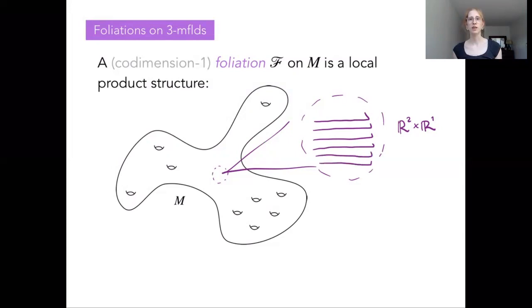And when we patch all of these different local product structures together, we want to be doing so in such a way that these planes line up. So we are actually filling out M with all of these surfaces that are just sort of stacked together. And these surfaces that we get from this local product structure, these are what we call the leaves of the foliation.